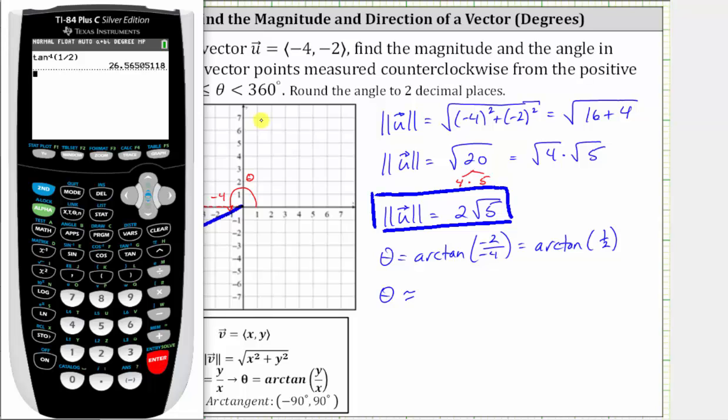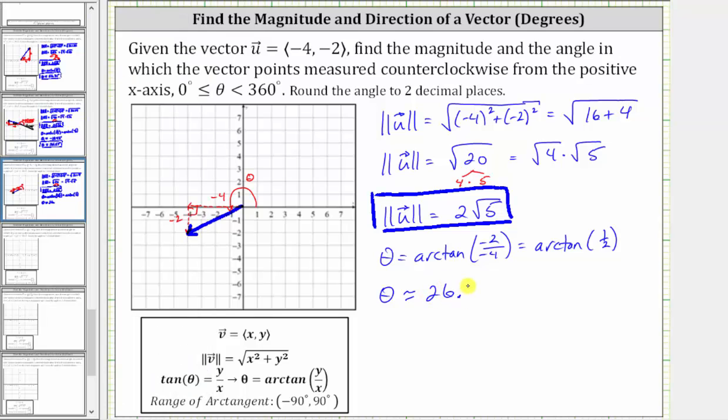Rounding to two decimal places, notice we round up to 26.57 degrees. But this is not the direction of the vector because 26.57 degrees is in the first quadrant, not the third quadrant. This will tell us the reference angle of our angle in the third quadrant.